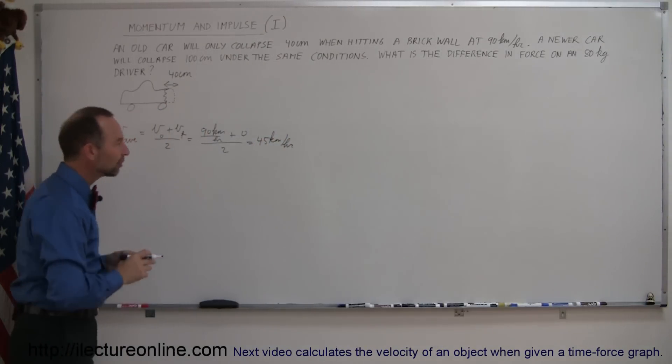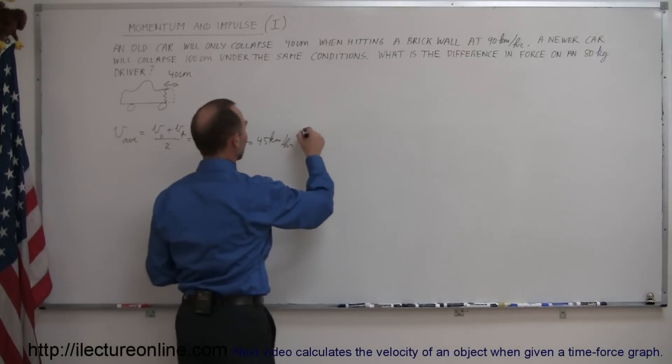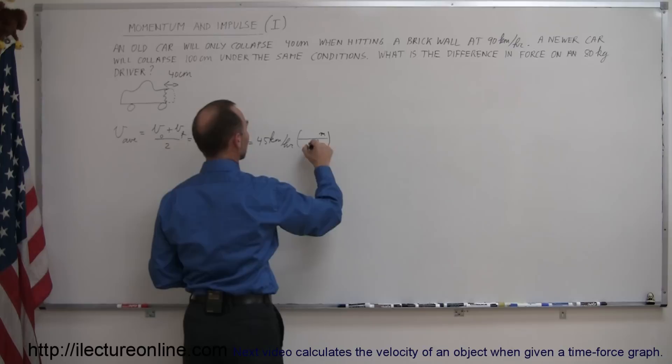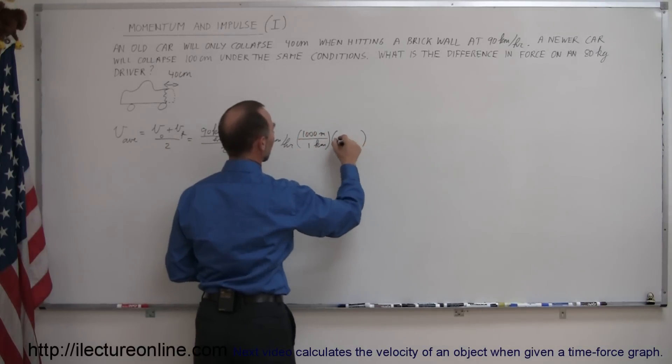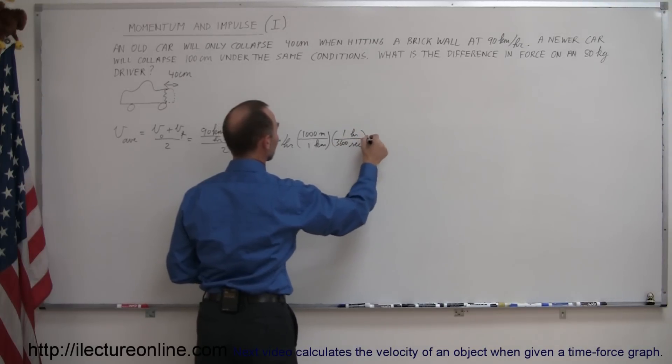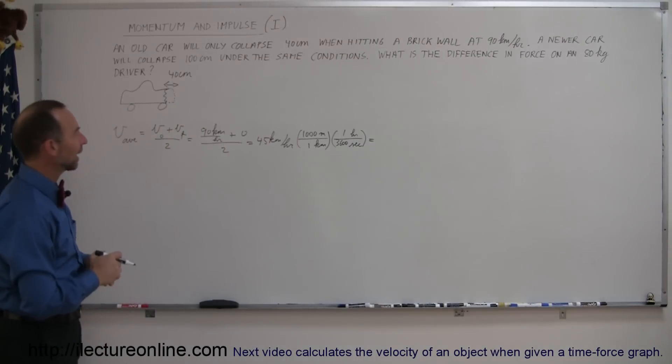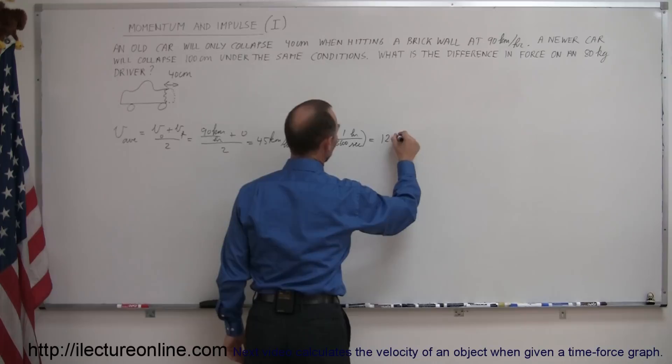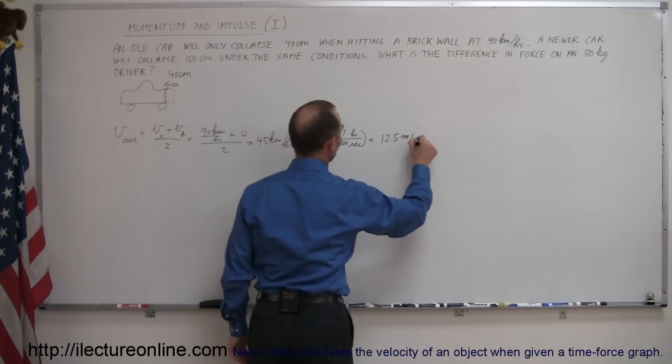And if we convert that to meters per second, we have to convert from kilometers to meters. One kilometer is a thousand meters, and then converting hours to seconds, one hour is 3,600 seconds. And when we divide that, if I remember correctly, it would be 12.5 meters per second.